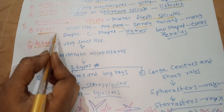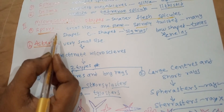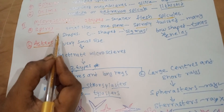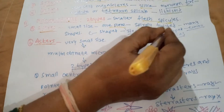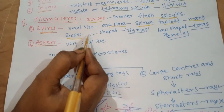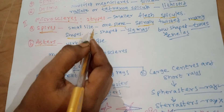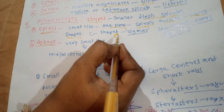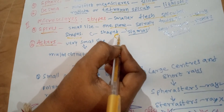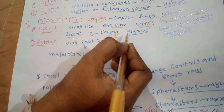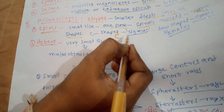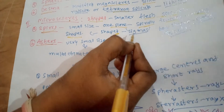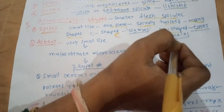Sigmas or chelae: these are very small in size. Spears are curved in one plane or spirally twisted and have many shapes. The most common type is the C-shaped curved hook, called sigmas. The bow-shaped type is a toxon, with curved hooks placed at each end called chelae.